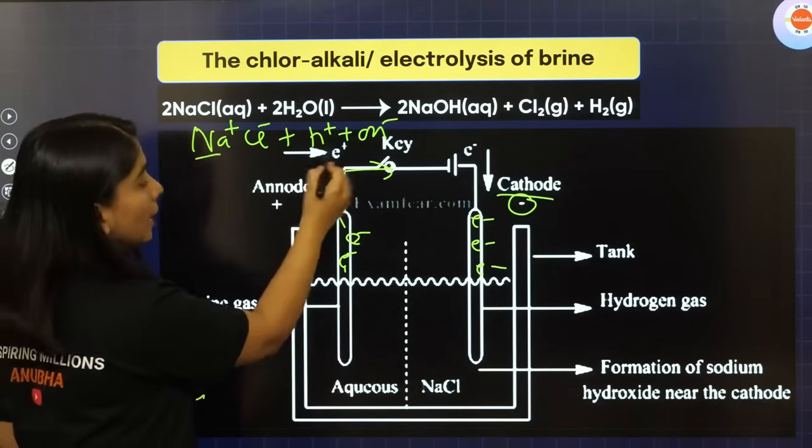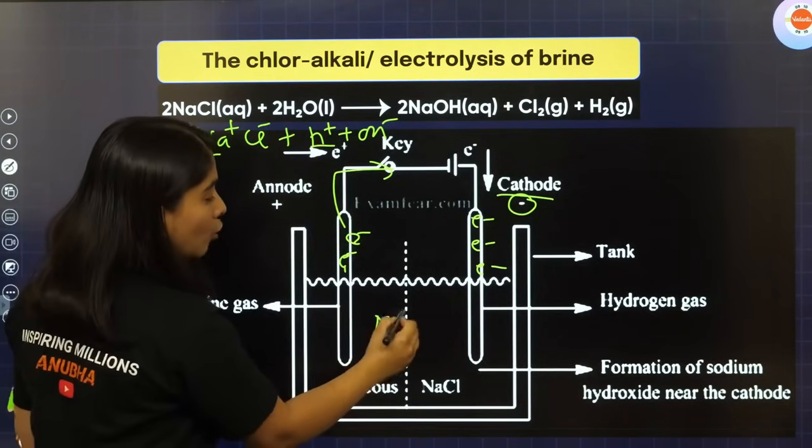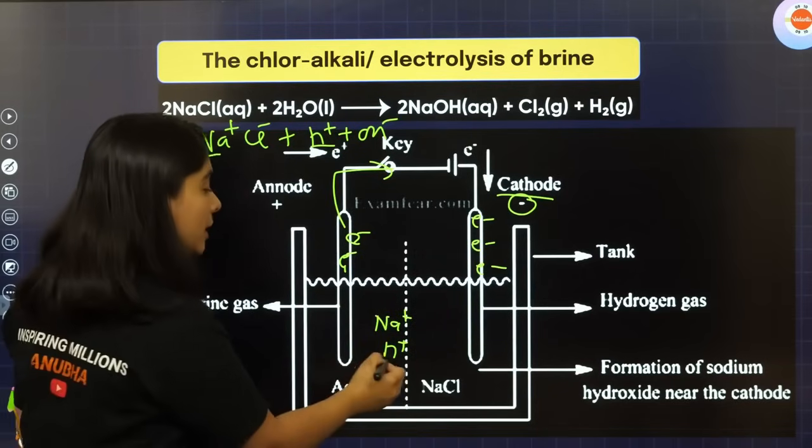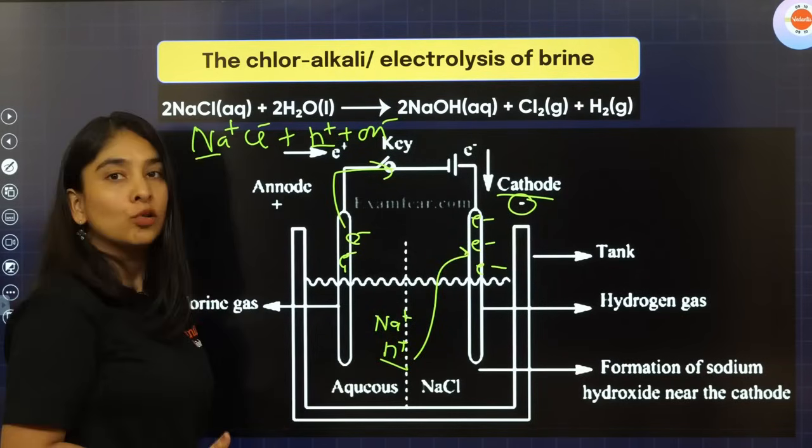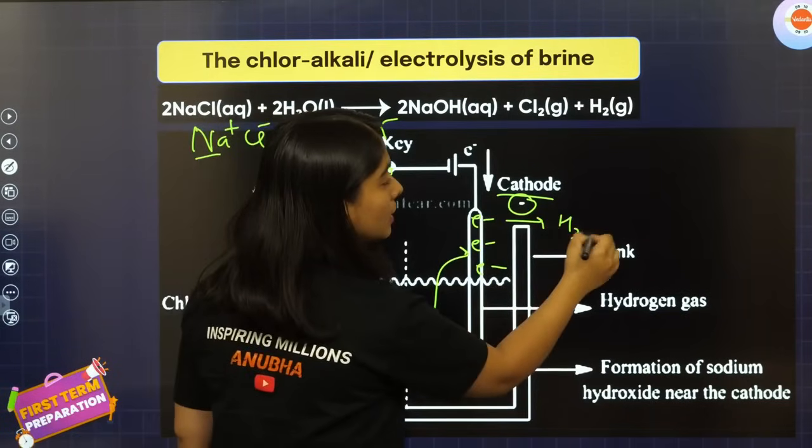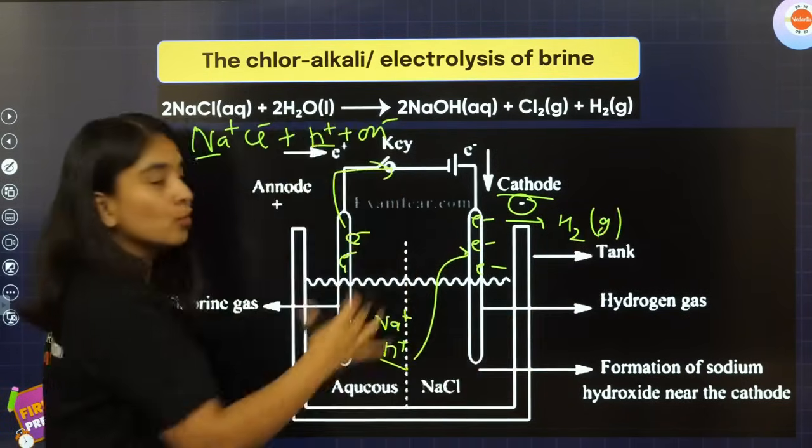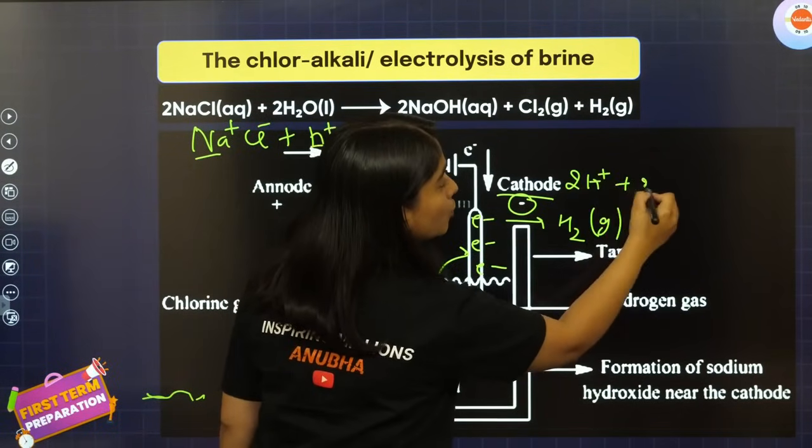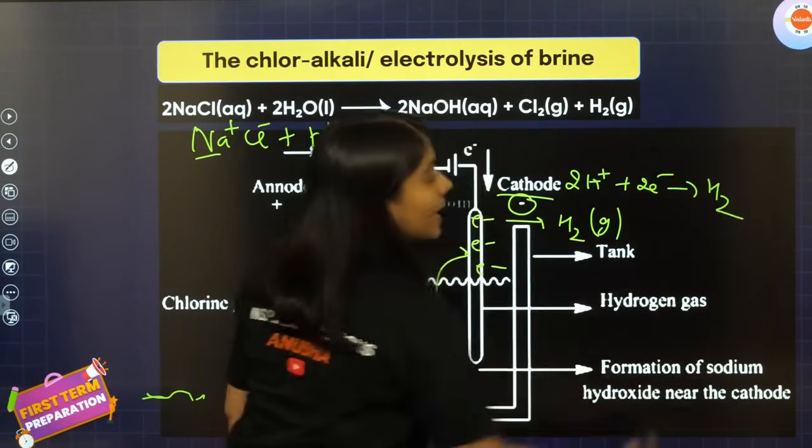What happens at the cathode? Sodium and hydrogen ion are competing. Both are positive and both go to cathode. But hydrogen wins because hydrogen carries more affinity for the electron. Hydrogen makes hydrogen gas here. How? Two hydrogen ions got two electrons and formed H2 gas.